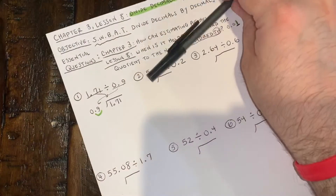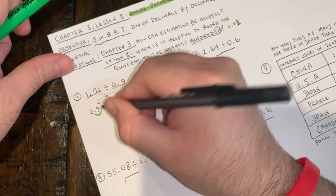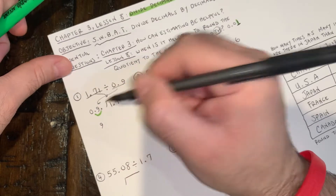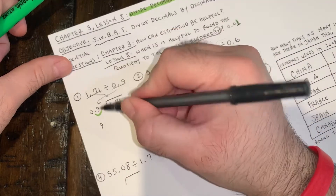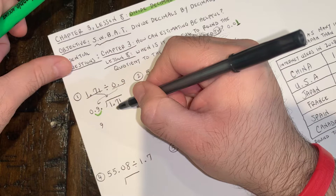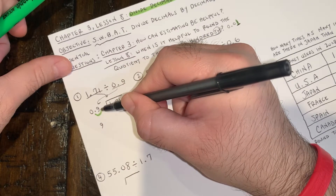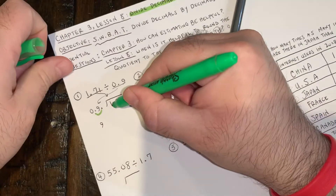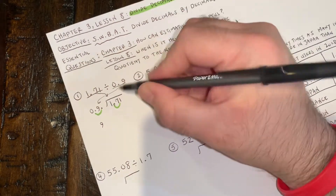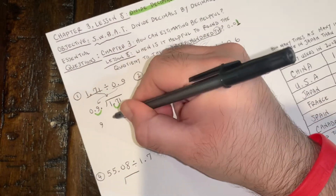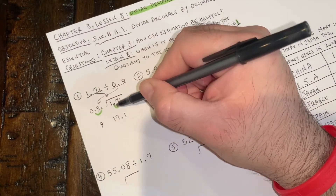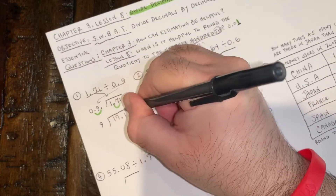In this situation, move the decimal one time. That makes it 9, because the decimal moved from in front of the nine to behind it. Whatever you do on the outside, the same thing must be done on the inside. If you moved it once on the outside, you move it once on the inside as well. So 1.71 becomes 17.1 — you moved the decimal once on the outside, so you move it once on the inside.